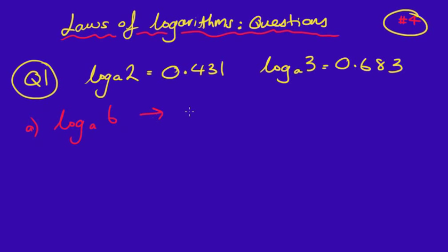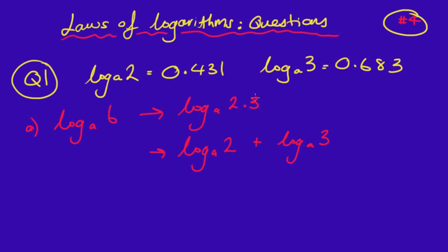Using our rules, we know that we can break 6 into 2 times 3. So log_a(2×3) — using our very first logarithm law — is the same as saying log_a(2) plus log_a(3). When we are multiplying these two things together we can add them separately. Log2 is 0.431 and log3 is 0.683. Adding those two numbers together we get 1.114.